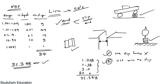Now you can try an example: make a slip gauge block of 63.859 mm using this M87 set and write your answer in the comment box.